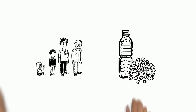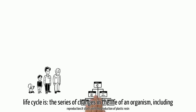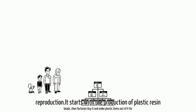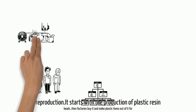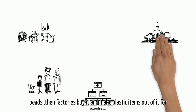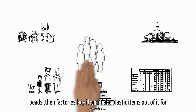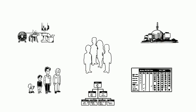Life Cycle of a Plastic. A life cycle is the series of changes in the life of an organism, including reproduction. It starts with the production of plastic resin beads, then factories buy it and make plastic items out of it for people to use.